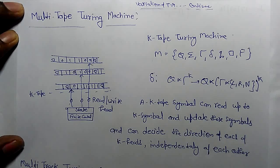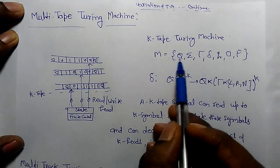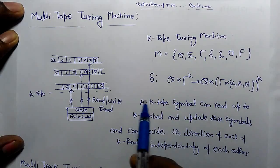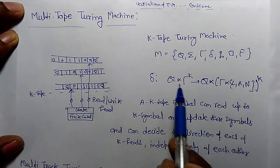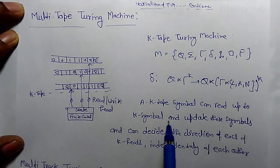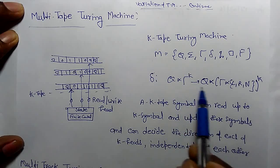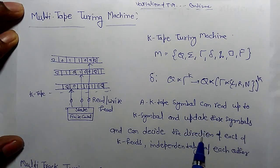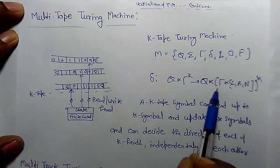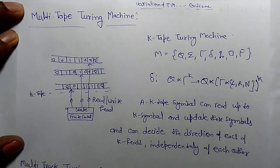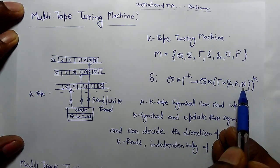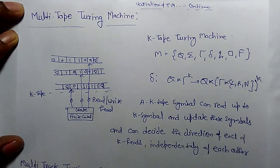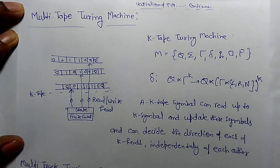As we know, the Turing machine has these tuples. The transition function for a multi-tape Turing machine is Q cross tau^k to Q cross (tau union blank) with directions left, right, and no-move, all to the power k. This is the transition function of the multi-tape Turing machine.